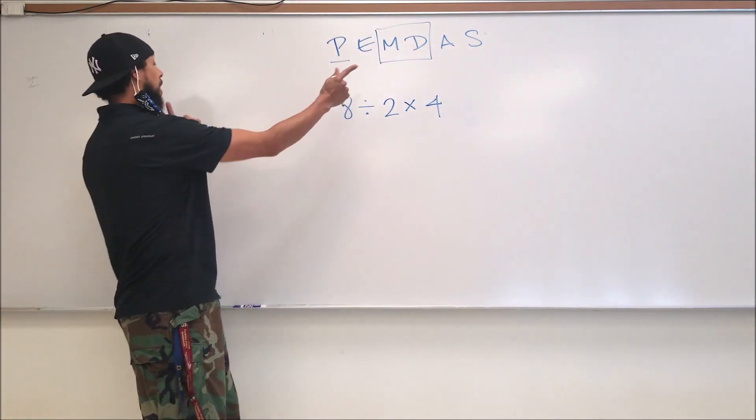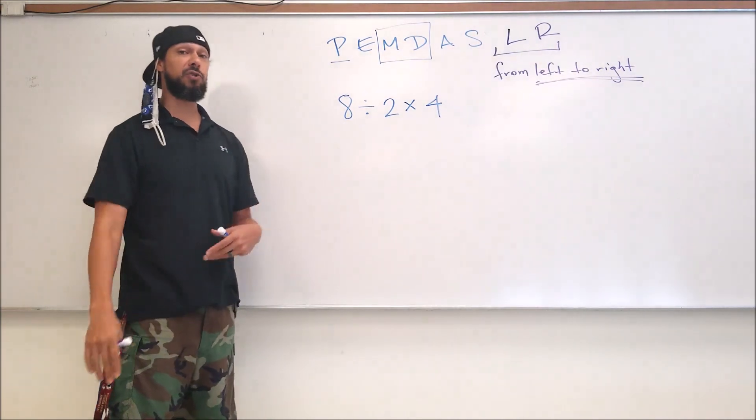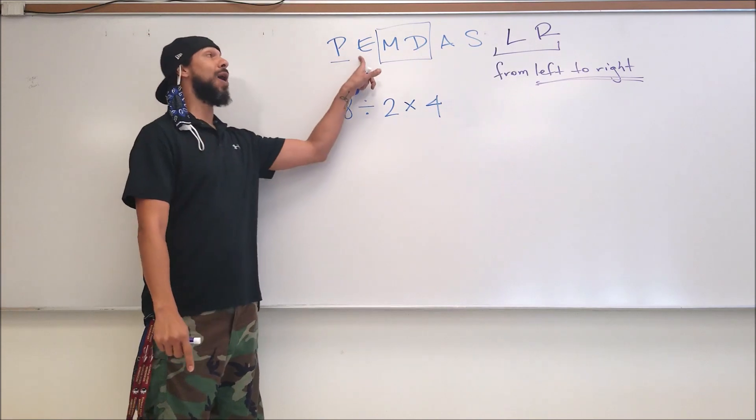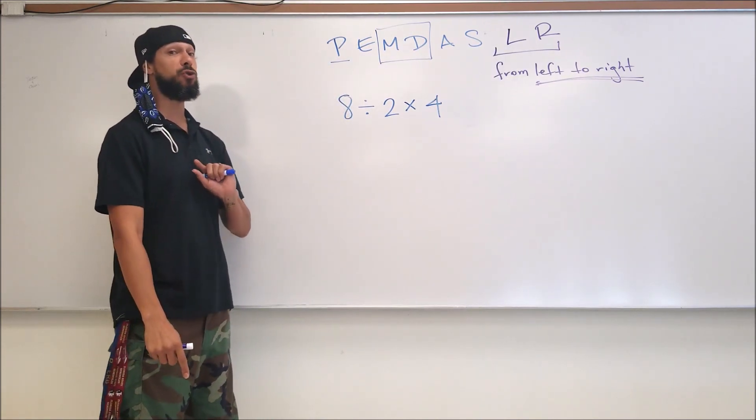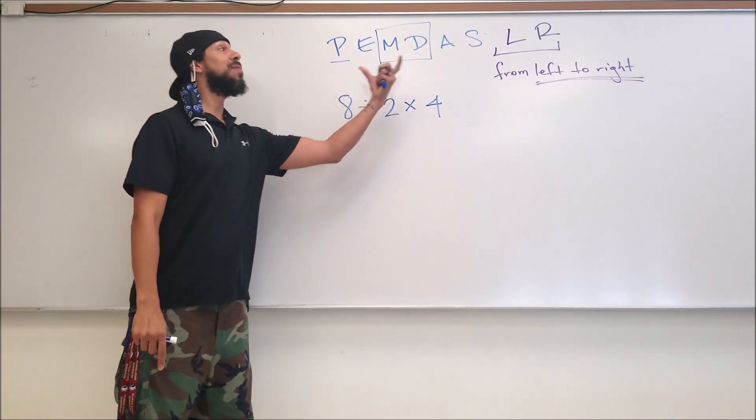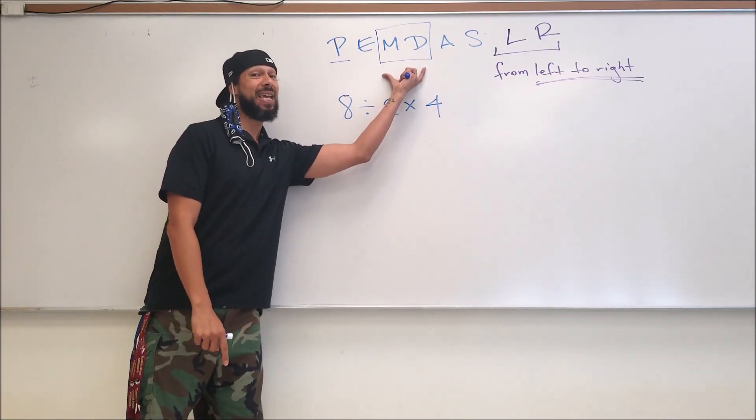What that means is you do parentheses first, and you do exponents second, and you do multiplication and division. Let me say that again: we multiply and divide in the same step, at the same time, from left to right, whichever comes first.